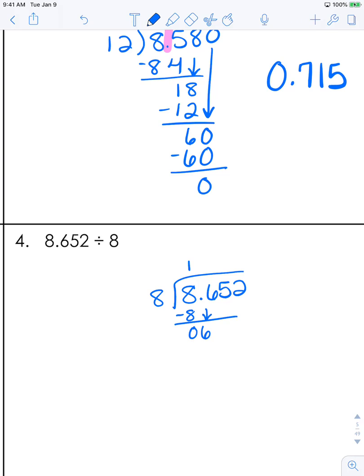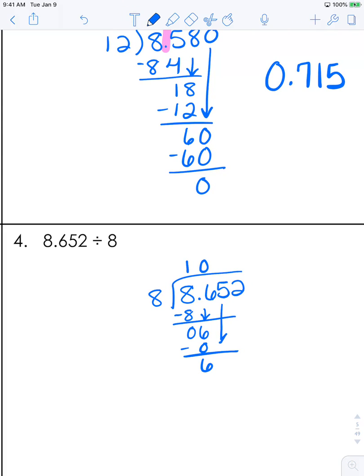But that does not mean bring down another number. That means you actually say it can go in zero times. So you'll subtract 0, subtract 6 minus 0, bring down the 5. And then you have 65 divided by 8. 8 goes in there 8 times. 8 times 8 is 64. Subtract. Bring down. 8 goes into 12 once.